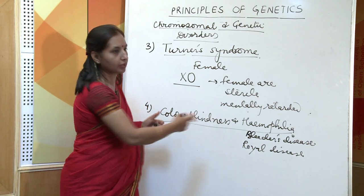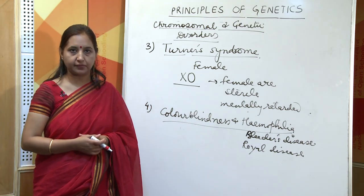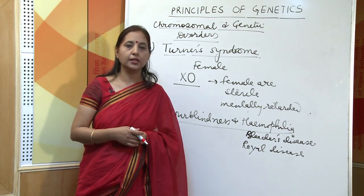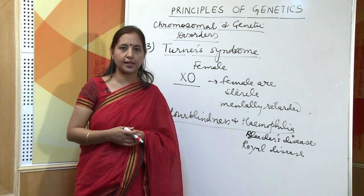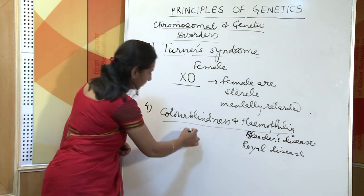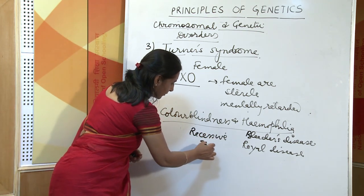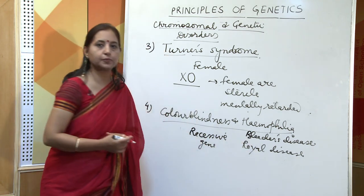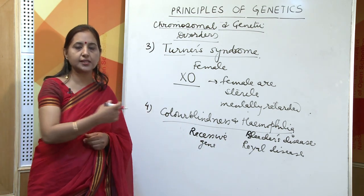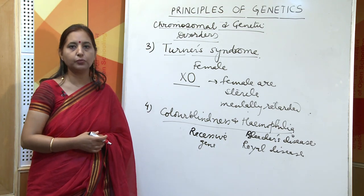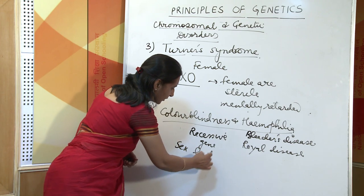Both disorders are due to the presence of a defective gene which is recessive — a recessive gene is one which is not able to express itself in the first generation. Both disorders are caused by a recessive gene, and since this gene is located on the sex chromosome, it is also called a sex-linked disorder.